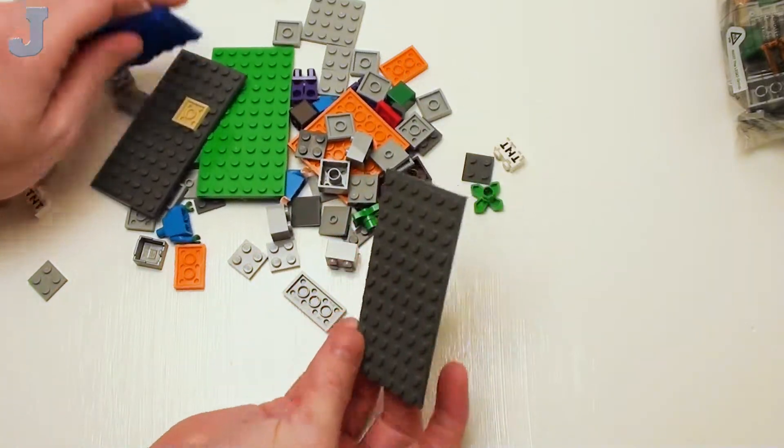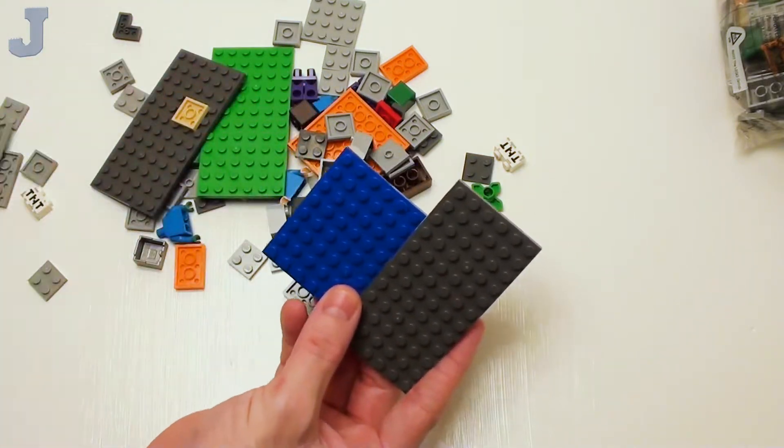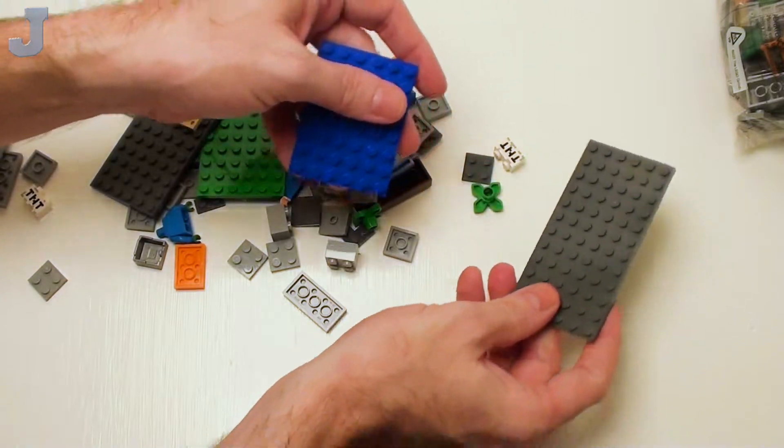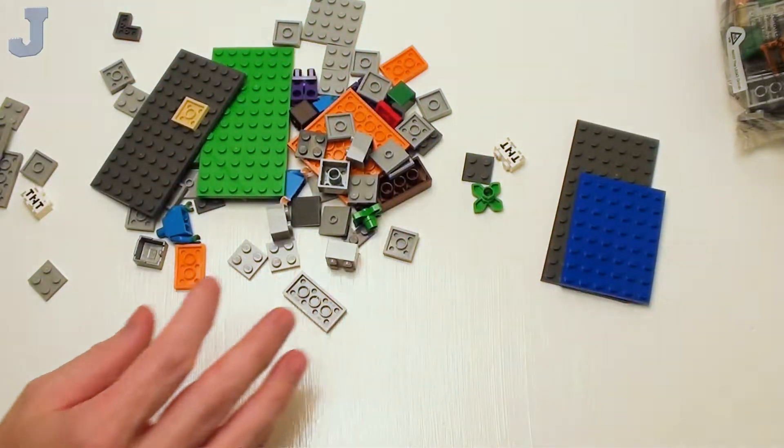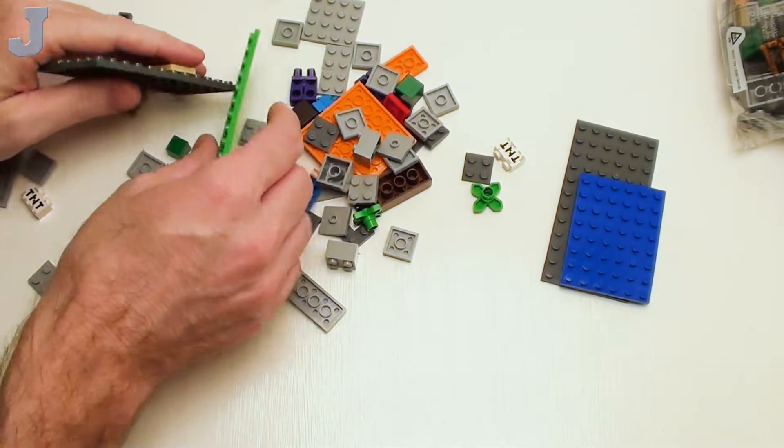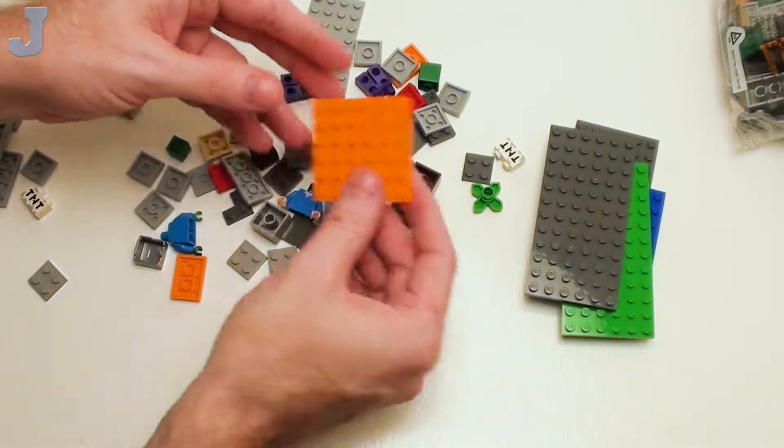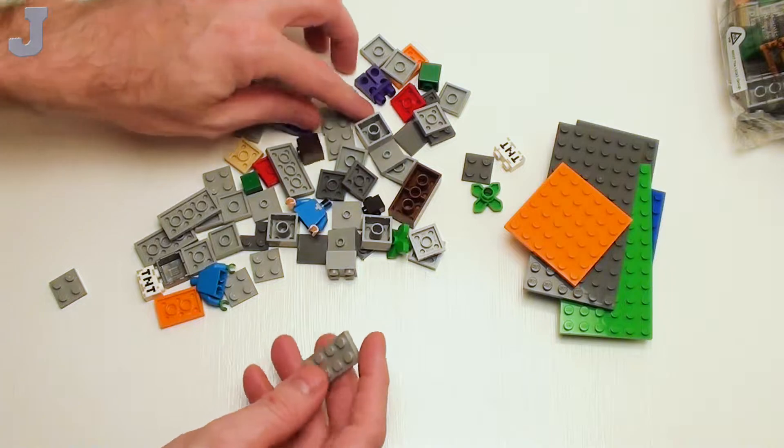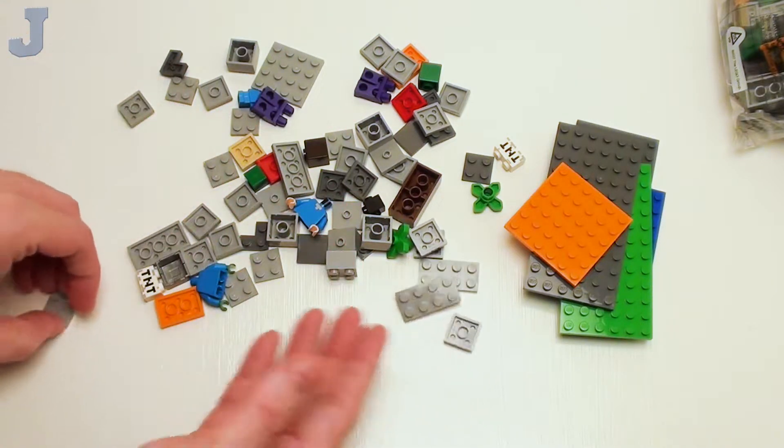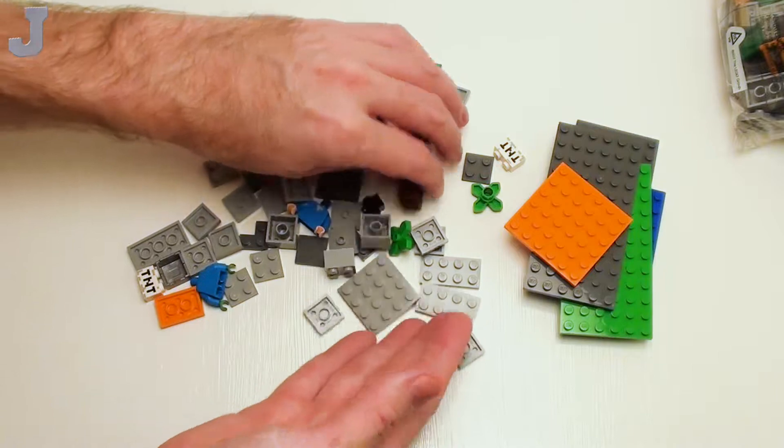Okay. So looks like we got ourselves a 6 by 12 and a 6 by 8 plate. Get that out of my way. We get several 6 by 12, 6 by 6, several plates, mainly 2 by 4 and 2 by 2 plates. Here's a 4 by 4 plate.